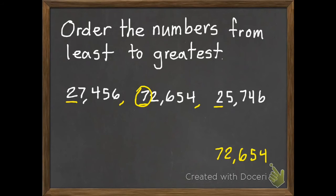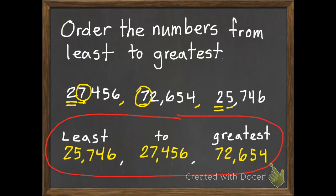Now I still have two numbers left. They both had a 2 in the 10,000th spot. So if we go to the thousands, we have a 7 and a 5. 7's greater. This means that will be in the middle. And double check to make sure they're least to greatest. And they are. So I'm done with my two examples.